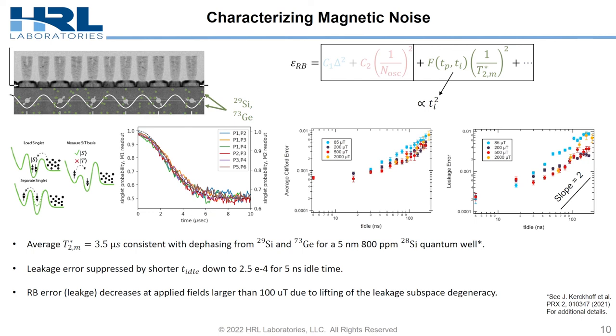Additionally, by optimizing our magnetic field, we can reduce the amount of leakage we have in the device by roughly a factor of two, due to the fact that we lift some of the degeneracy of the leakage subspace.